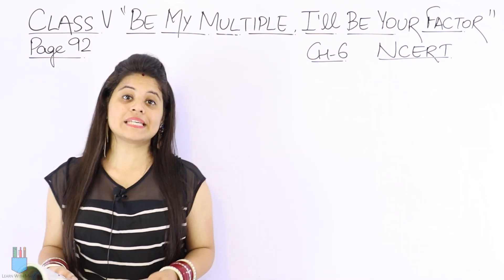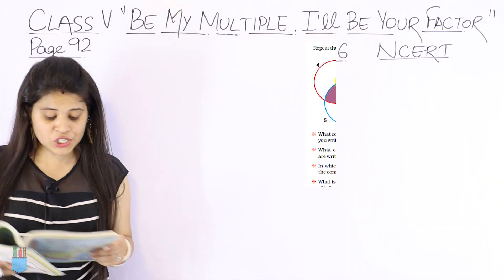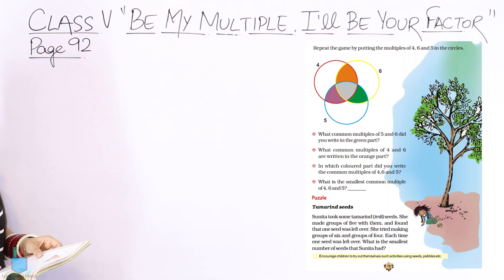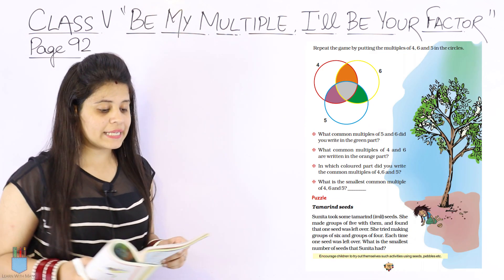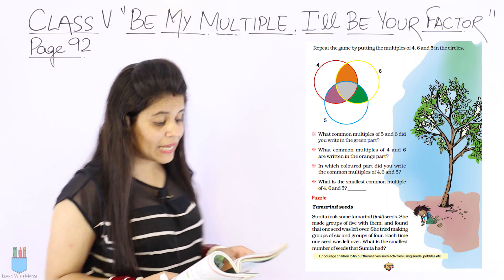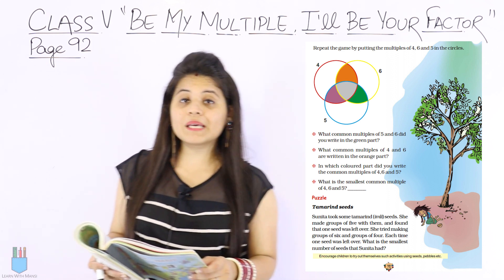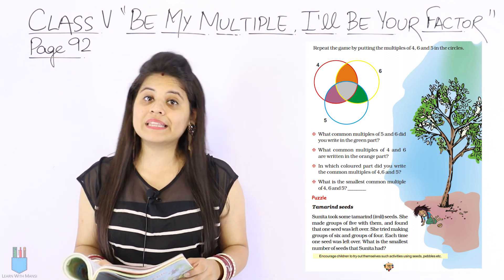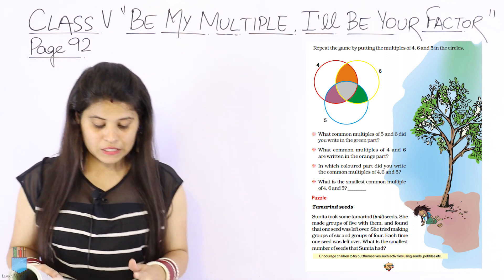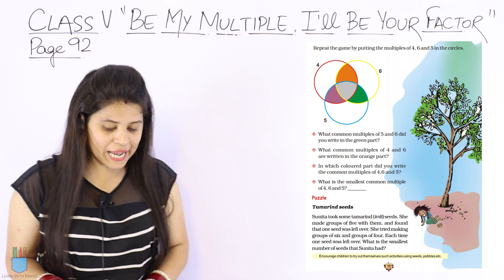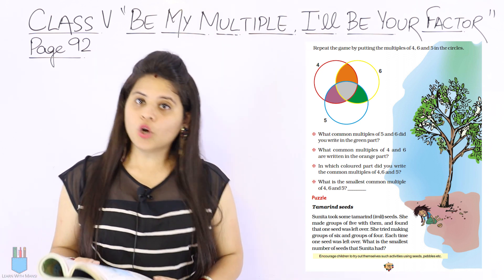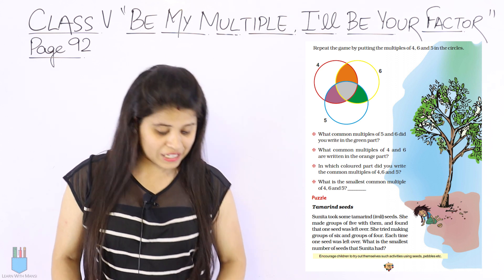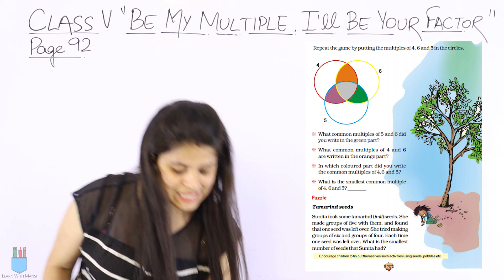Now we have here, I will also insert the page. So page 92, we have at the top: repeat the game by putting the multiples of 4, 6, and 5 in the circle. So basically we have 3 circles, and we have common multiples here — 4, 5, or 6.